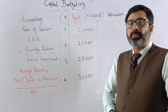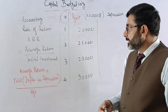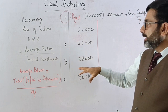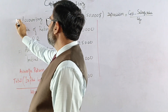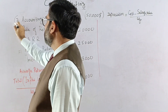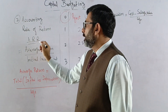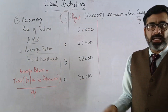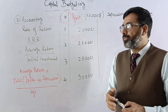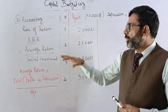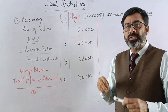We are discussing capital budgeting techniques. The next technique — the second one — is ARR, or Accounting Rate of Return. This is the second technique we use to decide whether to accept or reject a project.